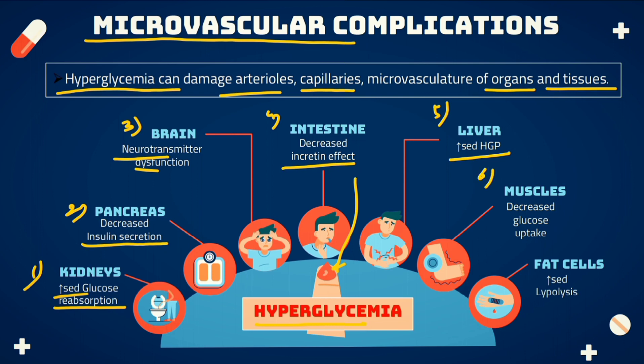There is also a decrease in glucose uptake by the muscles, so all the remaining glucose goes into blood circulation. The last mechanism is an increase in lipolysis, which ultimately provides substrate for gluconeogenesis to enhance the level of glucose in the blood.